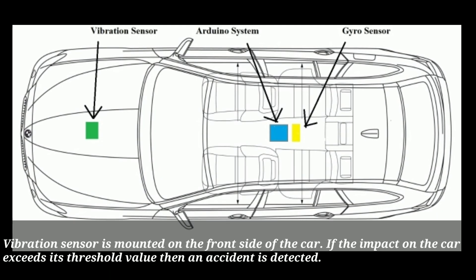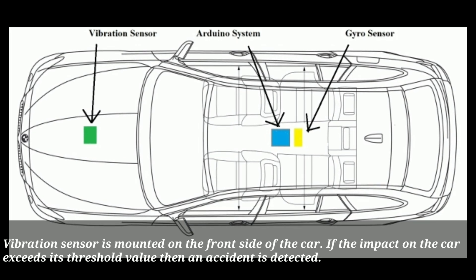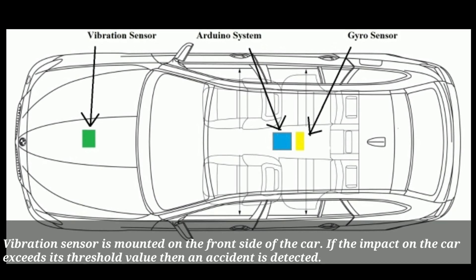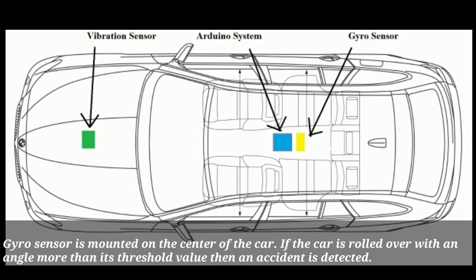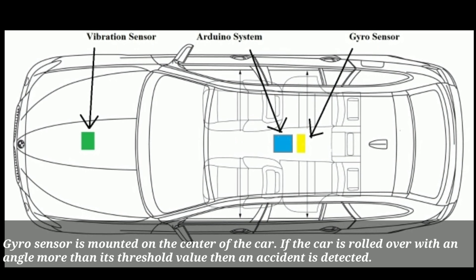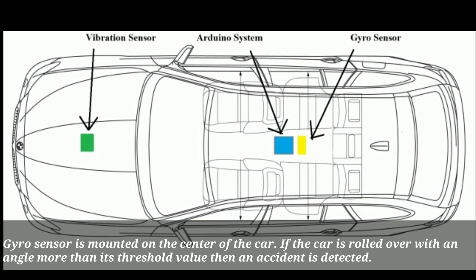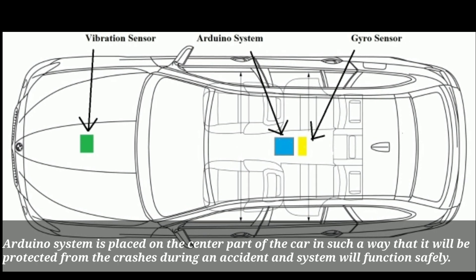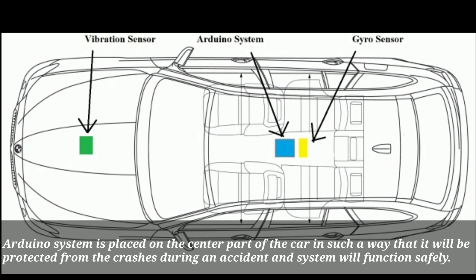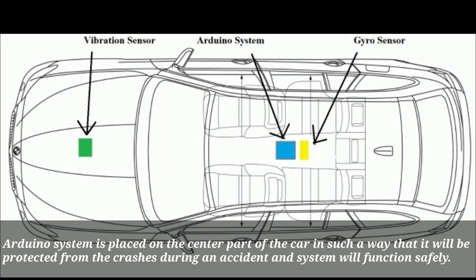The vibration sensor is mounted on the front side of the car. If the impact on the car exceeds its threshold value, then an accident is detected. The gyro sensor is mounted on the center of the car. If the car is rolled over at an angle more than its threshold value, then an accident is detected. The Arduino system is placed on the center part of the car in such a way that it will be protected from crashes during an accident and the system will function safely.